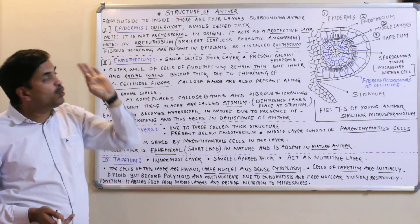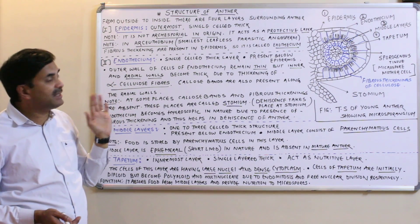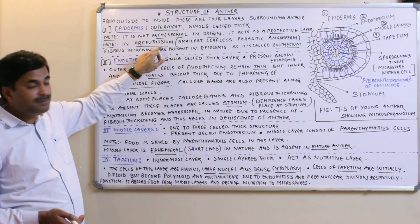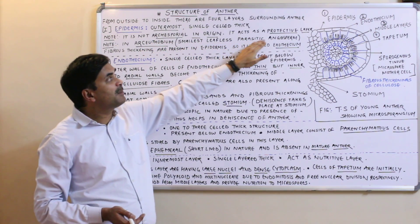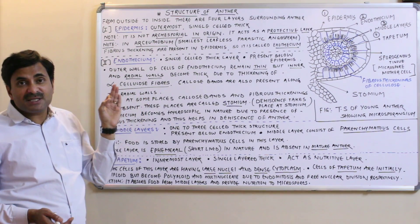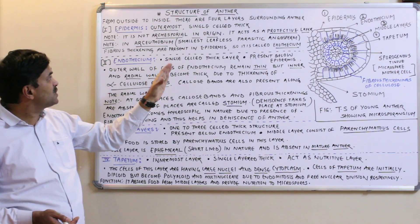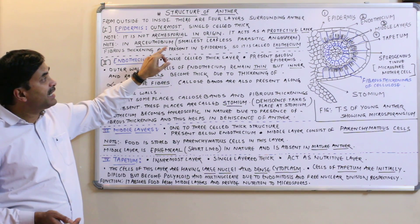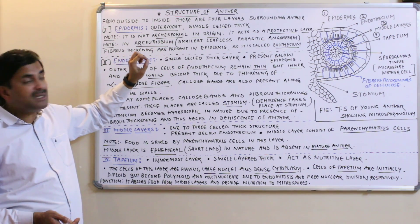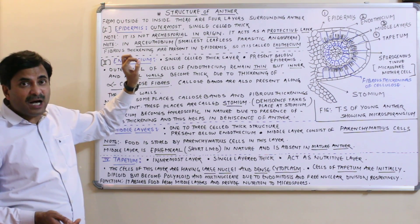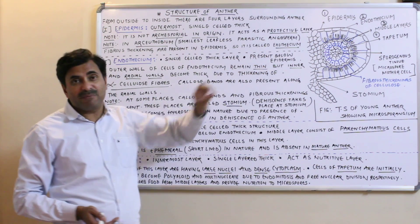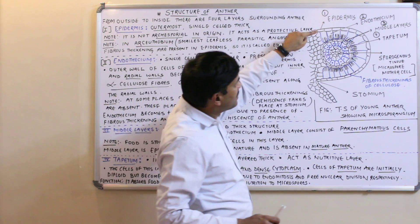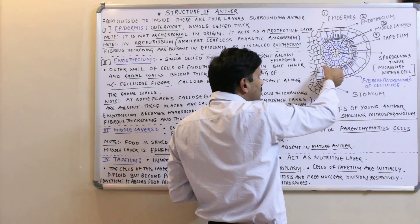The role of the epidermis is to give protection to the anther. In Arceuthobium — the smallest leafless parasitic angiosperm — fibrous thickenings are present in the epidermis. Because of this special feature, in Arceuthobium the epidermis is called exothecium.